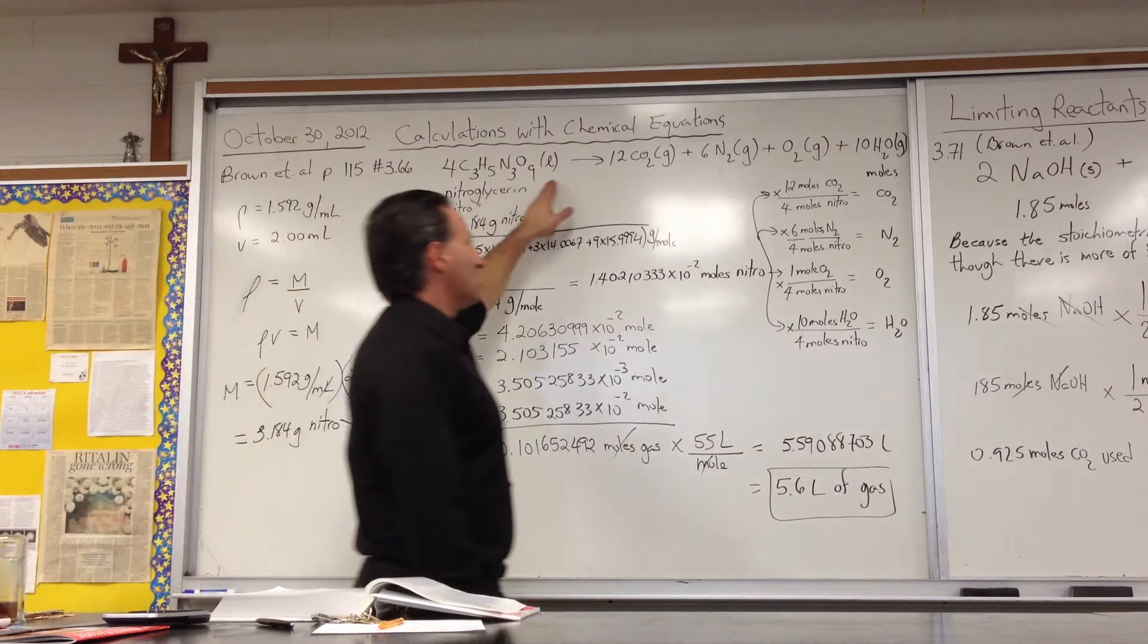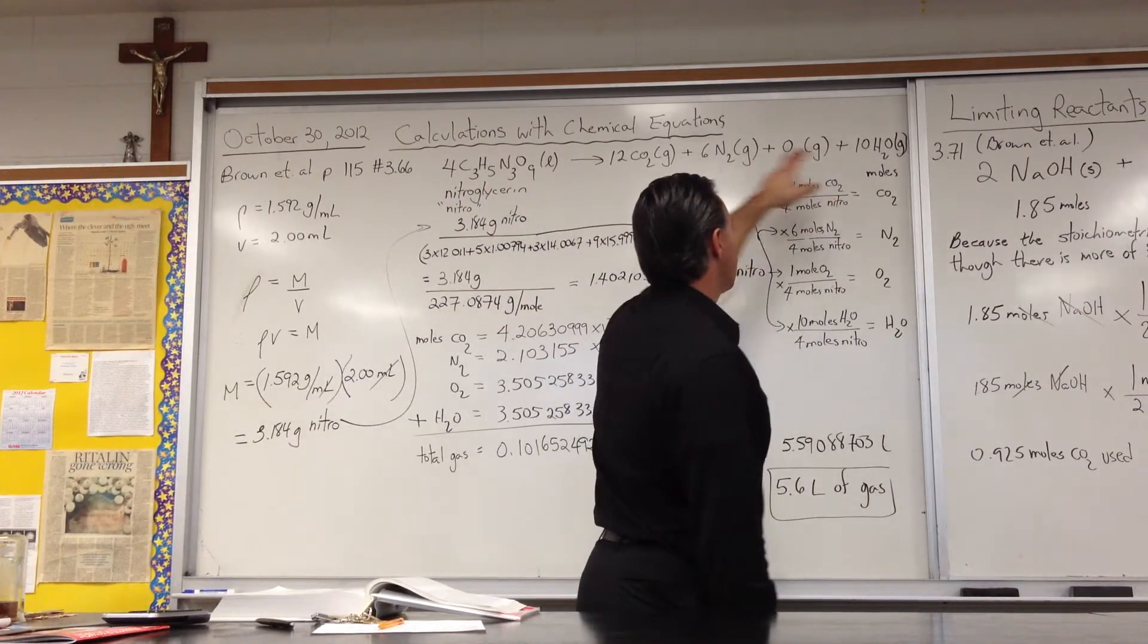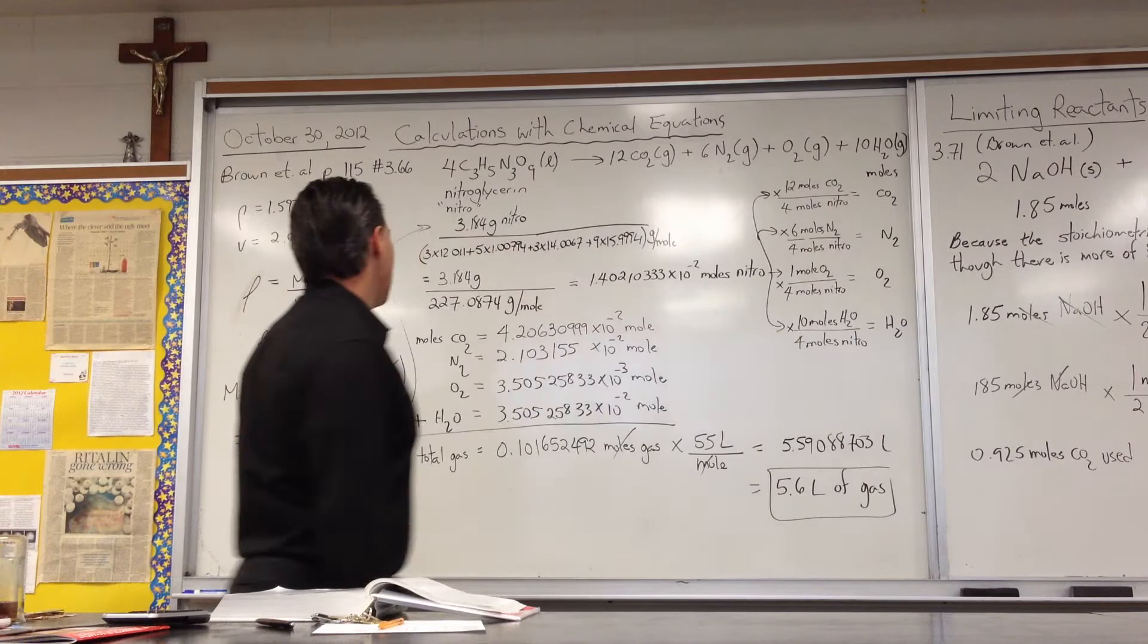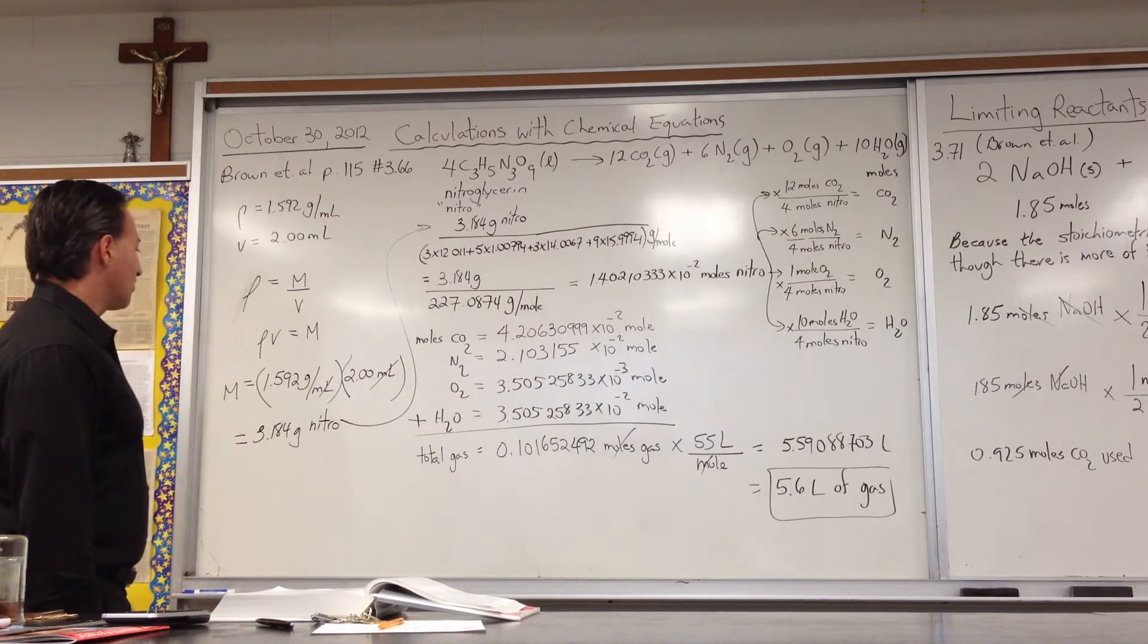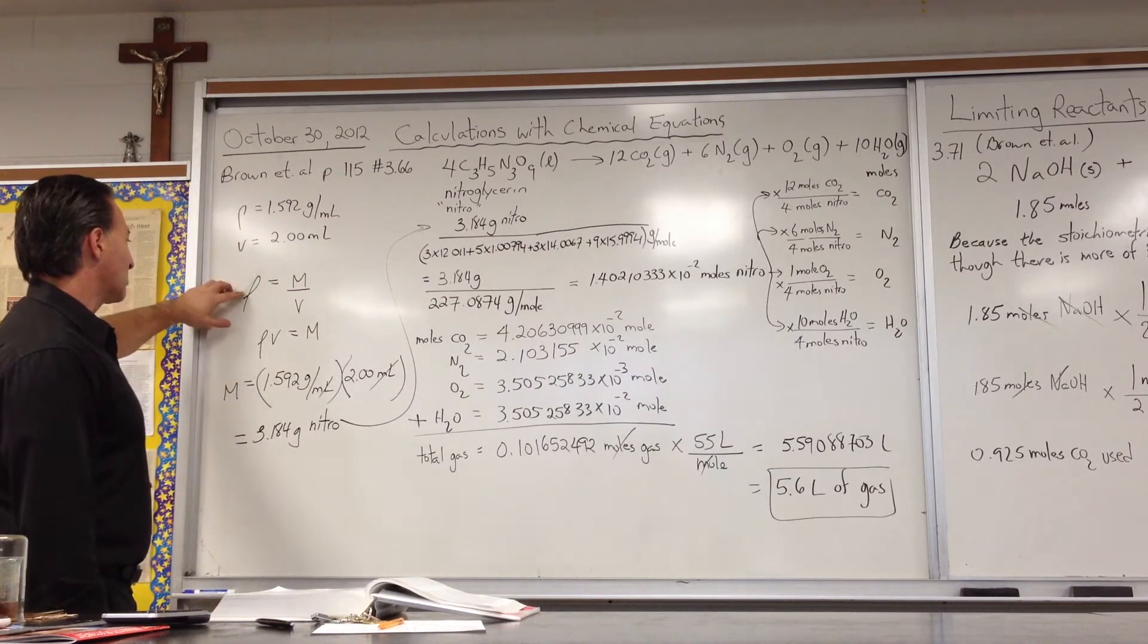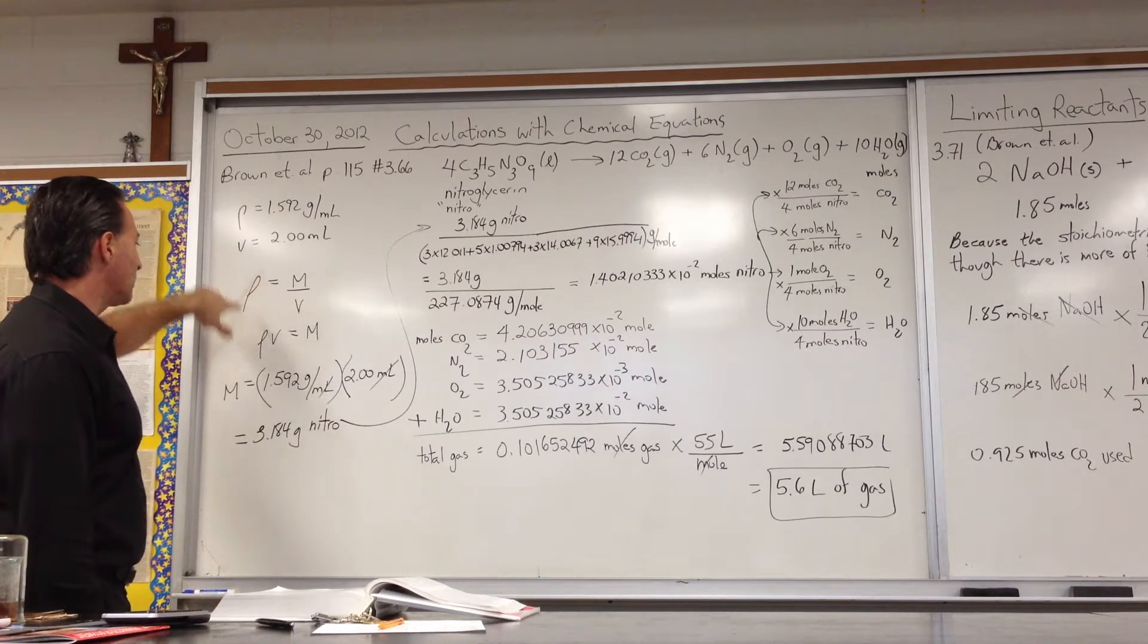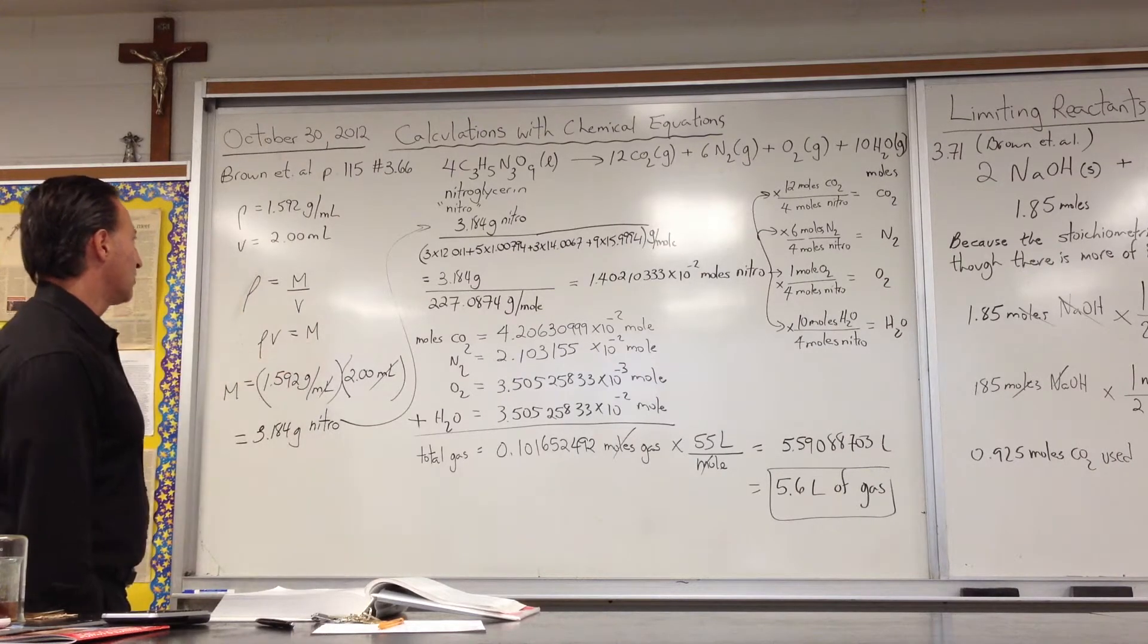And then they give us the balanced equation for the explosion of nitroglycerin and all the gases that are produced. So the first step here was to find out how many grams of nitroglycerin we had. So we used density equals mass over volume. We rearranged the equation to find the mass of nitroglycerin.